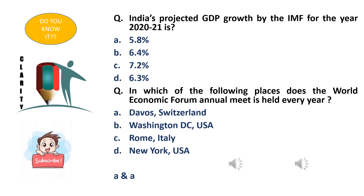Let's move on to the next question: India's projected GDP growth by the IMF for the year 2020-21. In the previous question we covered the IMF projection for 2019-20. The IMF has also given estimates for 2020-21. The options are: option A - 5.8%, option B - 5.6%, option C - 6.4%, option D - 7.2% and 6.3%. The right answer is option A - 5.8%.